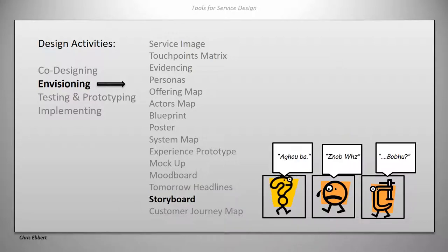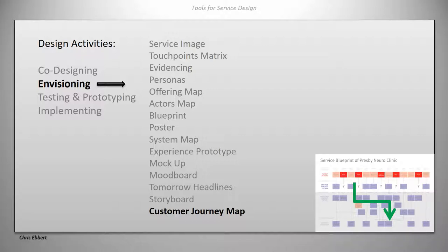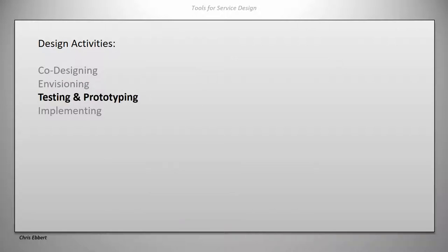Another thing is to create a storyboard, which is a way of telling the story of what you want to happen. It makes sense when there are many steps to your service — think of yourself as a cartoonist who draws what happens while the service is being provided. Or you create a customer journey map. If you already have a blueprint or system map, you can put in arrows to show who communicates with whom and what happens after event X, Y, Z.